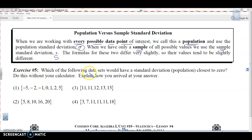Which of the following data sets would have a standard deviation closest to zero? Do this without your calculator. Explain how you arrived at your answer.